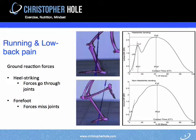One is the mechanics of how you run, and the second is the exposure — how much you run. So you've got both a quantity and a quality issue happening.